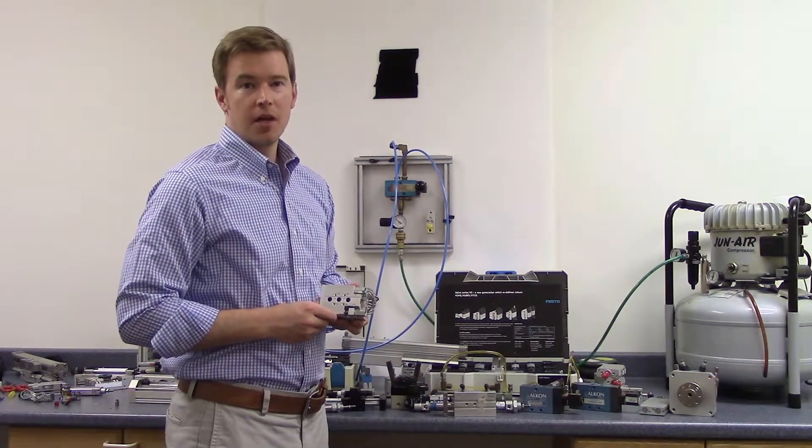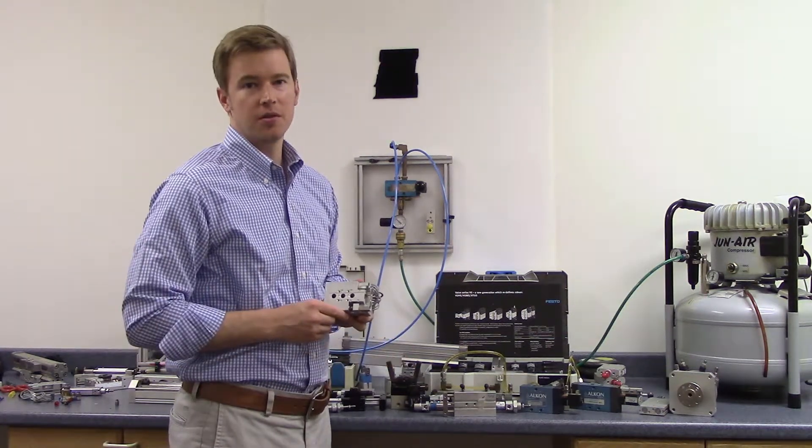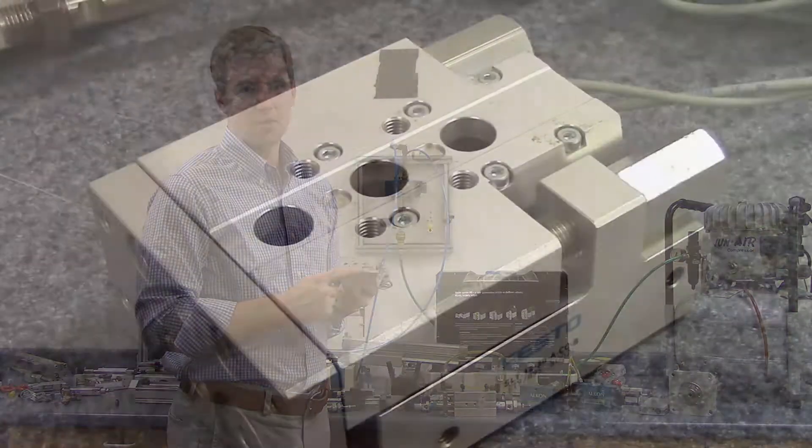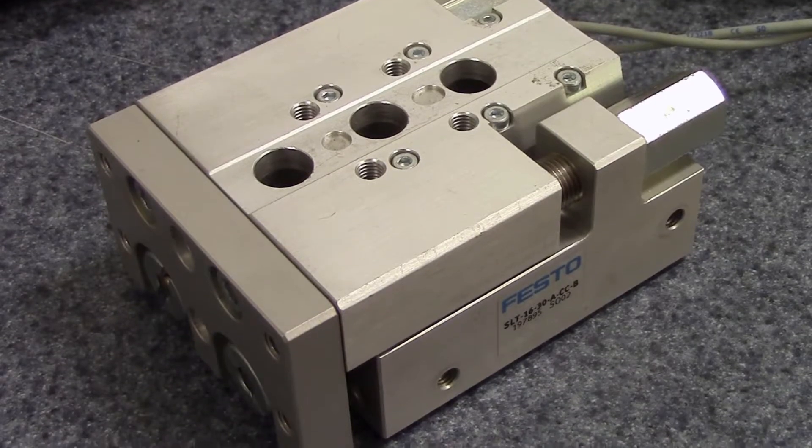A slide table actuator like this one can accomplish the same task as other guided actuators, but it also includes a top mounting surface, which allows for other equipment such as vacuum, grippers, and other additional actuators to be affixed to it.